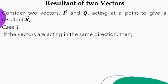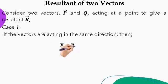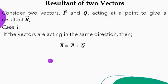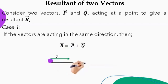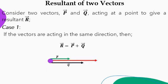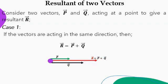Case number one: if the vectors are acting in the same direction, then the resultant R is given by P plus Q — you simply add them. So if this is our point of action, and we have vector P acting towards the right and vector Q also acting towards the right, these two vectors create a resultant — represented by the red line — which is simply equal to P plus Q.